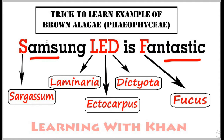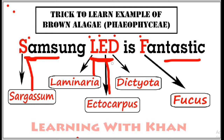Just focus on the red highlighted letters: S, L, E, D, and F — these are the keys. S in Samsung stands for Sargassum. In LED, L is for Laminaria, E is for Ectocarpus, and D is for Dictyota. Finally, F in Fantastic stands for Fucus. So these are the five important examples of brown algae.